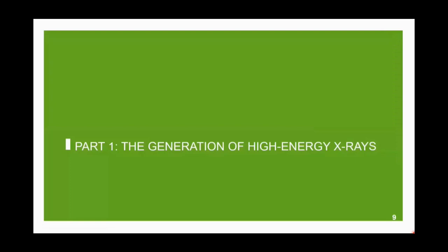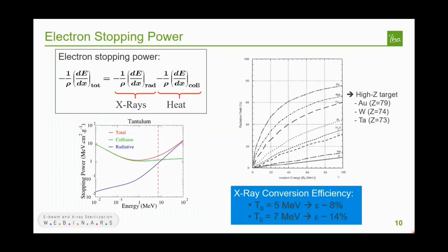Let's start with Part 1: generation of high energy x-ray. When electrons hit matter, they lose energy through two processes. The first is collision, which produces heat inside the target. The second is radiation — electrons produce x-rays emitted from the target. This graph clearly shows that the radiation yield, which is the fraction of energy transmitted as x-ray, is strongly dependent on electron energy and also on the target's atomic number Z. You want to use a high-Z target such as gold, tungsten, or tantalum to optimize x-ray production.